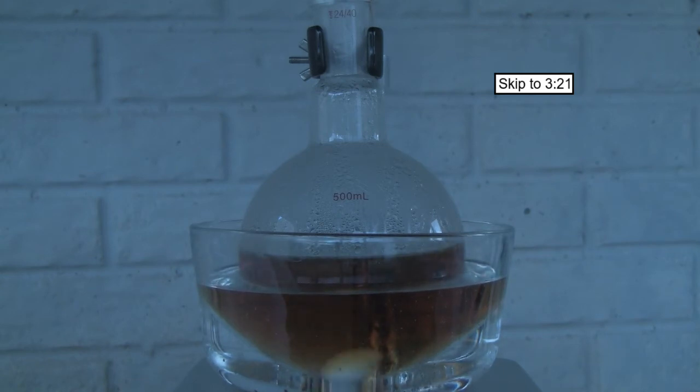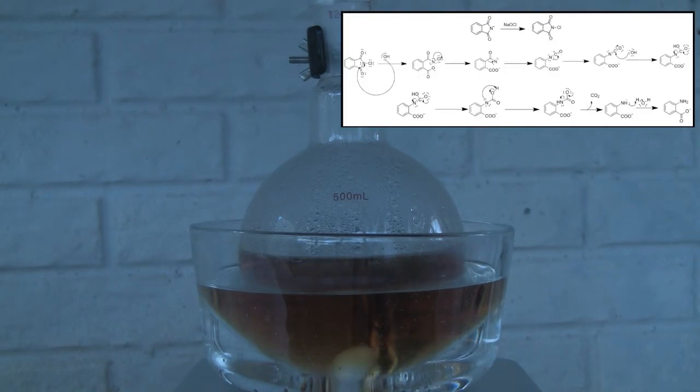A disclaimer about the mechanism is that it is a proposed mechanism that I came up with, as I could not find an exact mechanism for the Hofmann rearrangement for an imide like phthalimide. The reaction starts with the hypochlorite ion chlorinating the nitrogen on the sodium phthalimide, which jumpstarts the reaction.